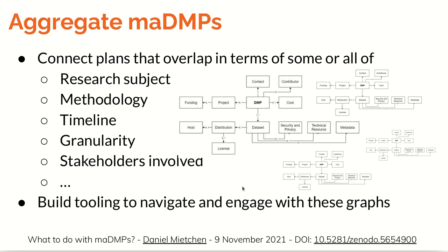Another thing we could do with machine actionable DMPs is aggregate them by a number of parameters — I've given some examples here — and we can also build tools to navigate and engage with that space. If we link and aggregate different DMPs they form a graph, and we can navigate those graphs, which will tell us something about the research area or the kind of research being done in the vicinity of those data management plans.